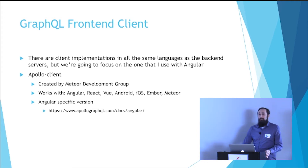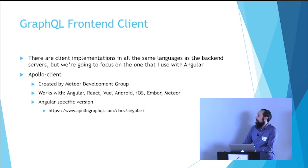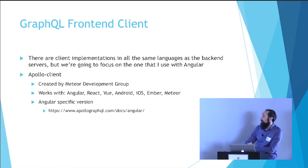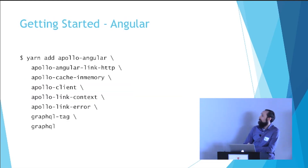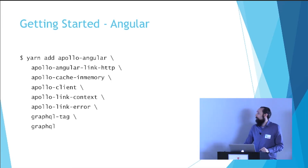Let's now switch to the frontend, since that's what most of us are here for since we're talking about Angular. There are client implementations in basically all the same languages as the backend servers. Probably the most popular one is Apollo, and Apollo has a specific implementation for Angular very similar to any of the other Apollo implementations. It is created by the Meteor Development Group, and Apollo in general works with Angular, React, Vue, Android, iOS, Ember, and Meteor. To get started in an Angular application, the packages you would add are: Apollo Angular, Angular HTTP Link, an in-memory cache module, and the GraphQL tag library for generating your queries and mutations.